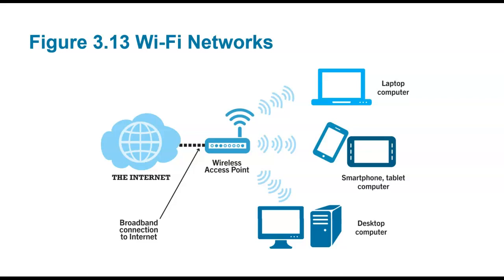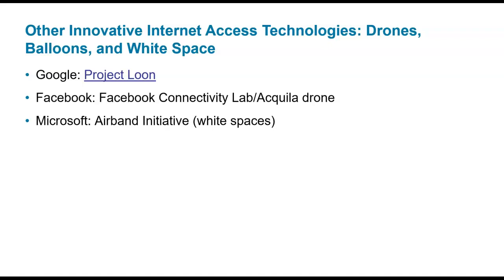Large swaths of the world don't have good connectivity, and providers are trying to counter this. Google has something called Project Loon, experimenting with high-altitude balloons that beam Wi-Fi down to people on the ground. Facebook is trying something similar with drones, and Microsoft has a similar initiative. All of these companies want to get internet into places like the developing world — so they can build more customers for their services.